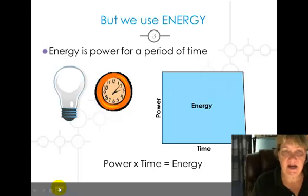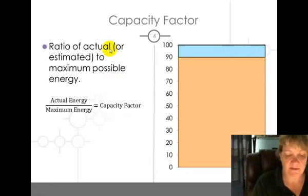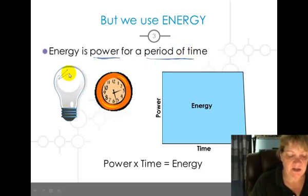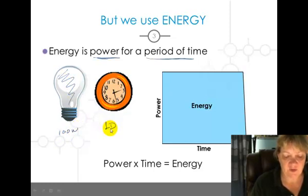Energy is power for a period of time. So if this was a hundred watt bulb and it ran for a day, you turned it on and left it running for 24 hours, the energy would be 100 watt days.